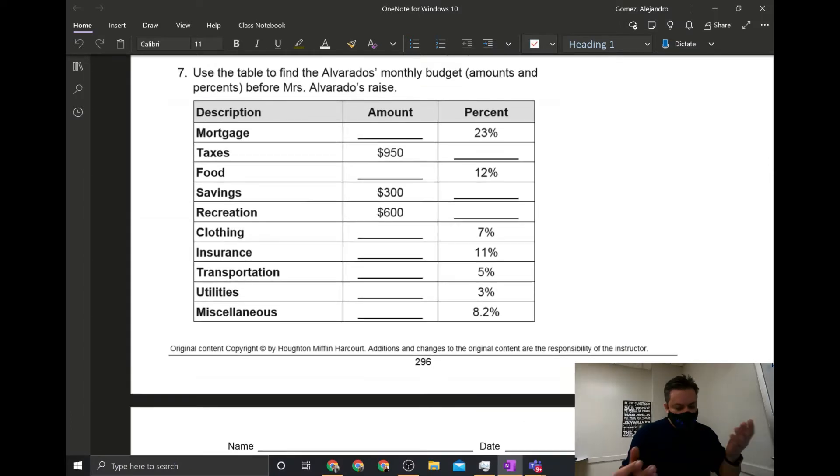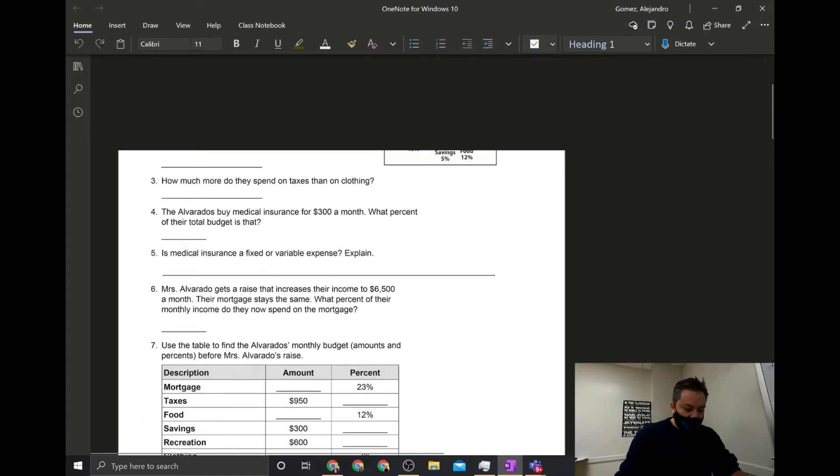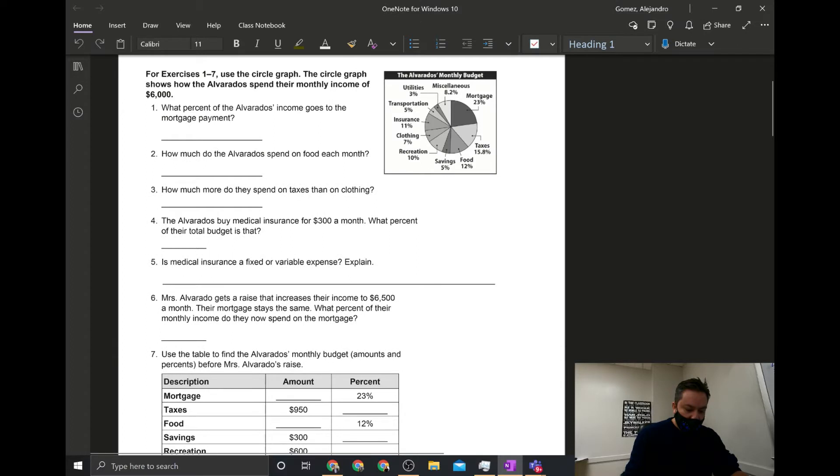I just want to make sure that you know what you're doing. I'm going to be able to find the amount and I'm going to be able to find the percent, and this is all you have to do for this table right here. Looking at this right here, that table is compared to the circle graph over here.